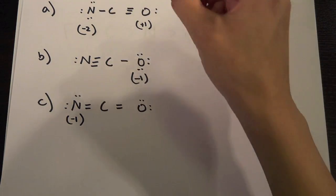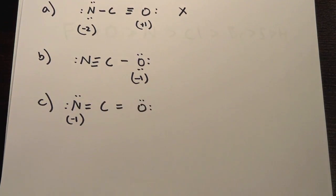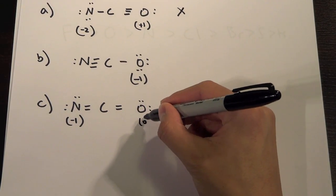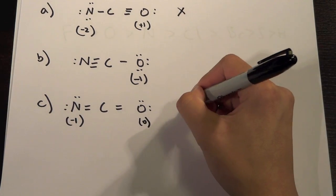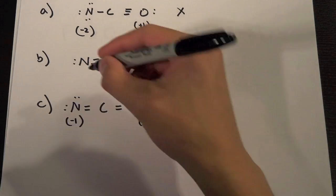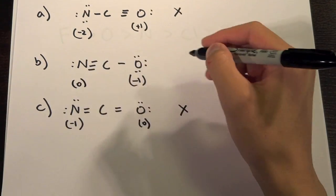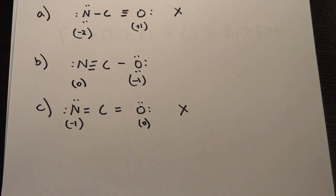The N is negative one and the O is zero and that again does not follow. We want the O to have the most negative and the only one that that would be the case is this one right here, the O is negative one and the N is zero so that would be our answer right there.